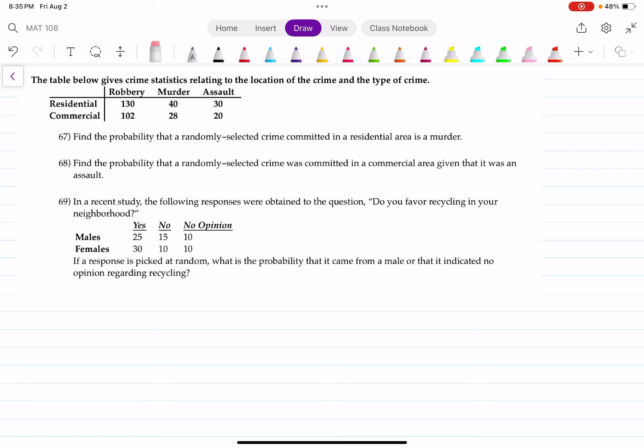Find the probability that a randomly selected crime committed in a residential area is a murder. I read that completely incorrect. Find the probability that a randomly selected crime committed in a residential area is murder.